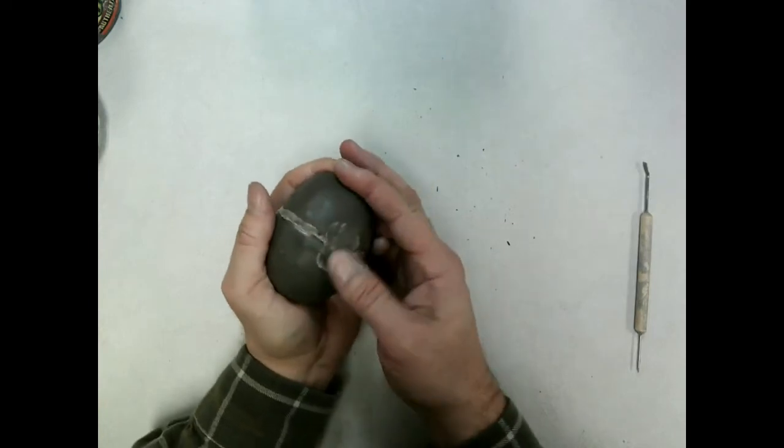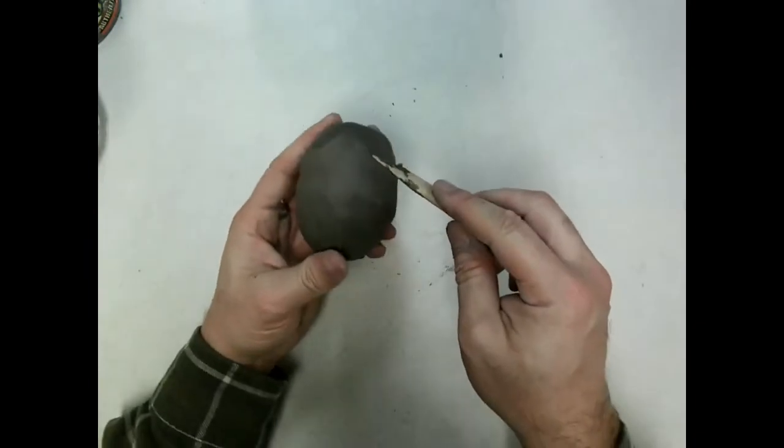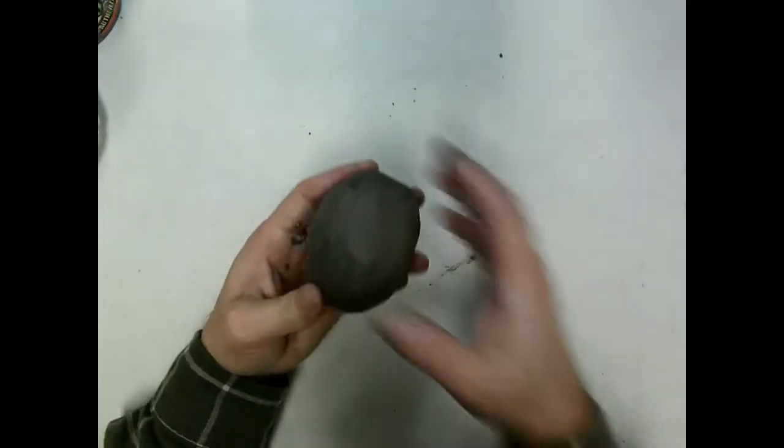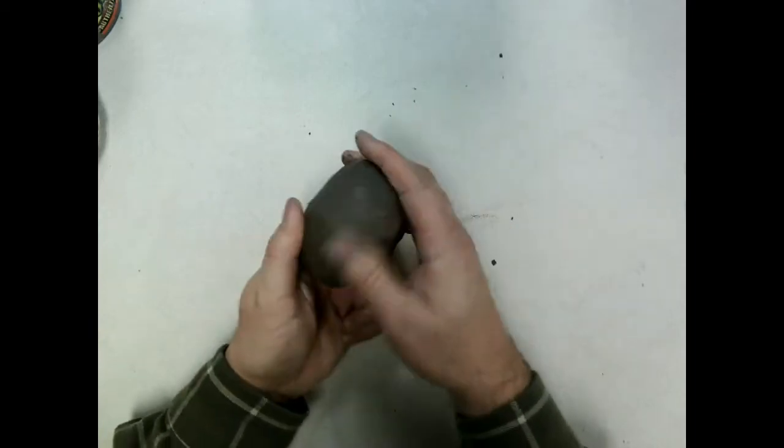And then I'm going to blend along that seam and smooth out that seam. You could even use a tool if you want to help you blend. And then take your thumb, your finger, continue to blend across that surface to smooth it out.